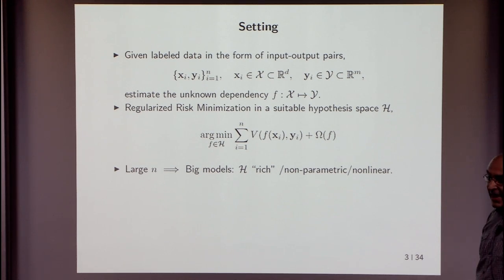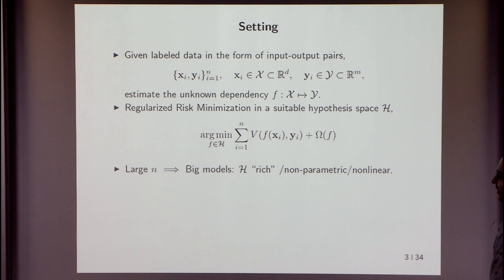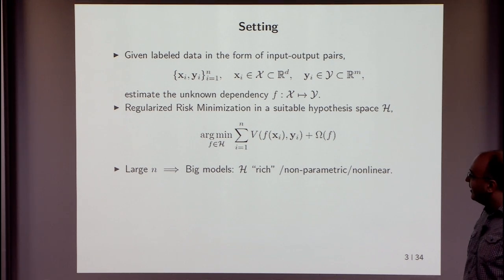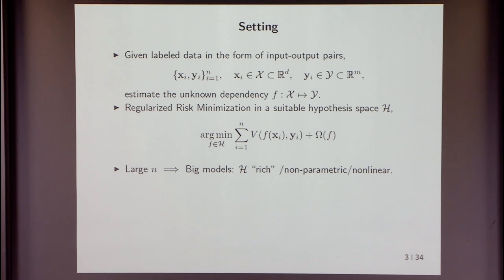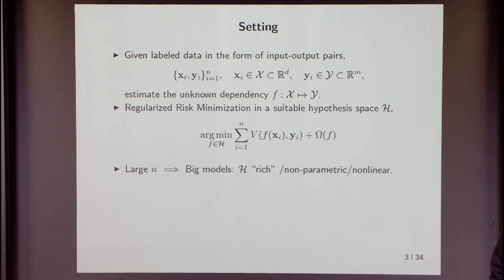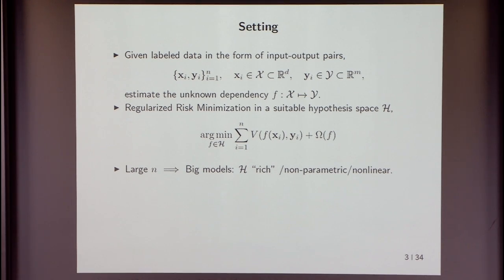The interest here is on large n — large amounts of labeled data — which motivates the use of big models. We want the hypothesis space to be rich, able to model very complex dependencies. We're looking for non-parametric or near non-parametric models that grow in complexity as data comes in, and we want to find nonlinear dependencies.